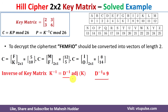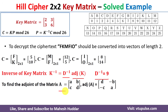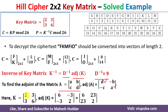Next we calculate the adjoint of K. For a general 2x2 matrix [[a, b], [c, d]], the adjoint is [[d, -b], [-c, a]] — swap the diagonal elements and negate the off-diagonal elements. Applying this to K = [[2, 3], [3, 6]]: swap 2 and 6 to get [[6, -3], [-3, 2]]. Taking mod 26: 6 mod 26 = 6, 2 mod 26 = 2, and we need to handle the negative values.